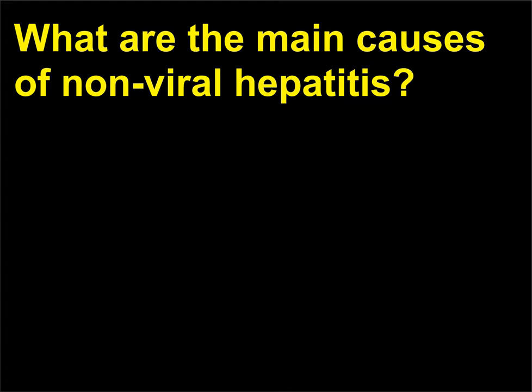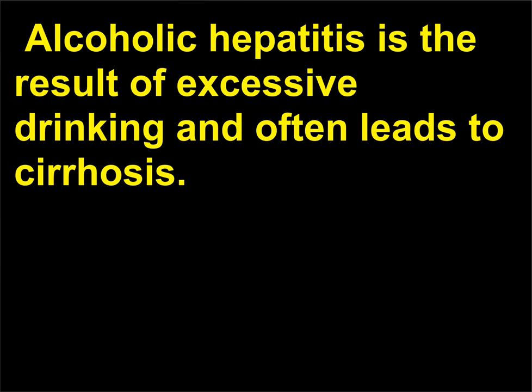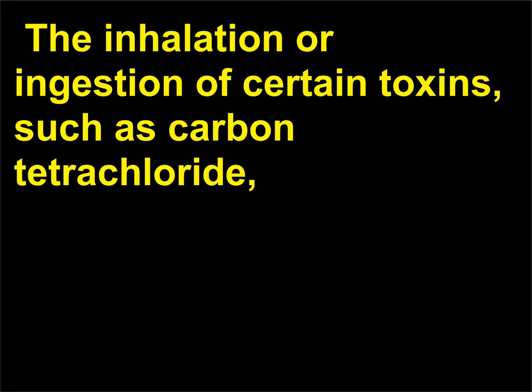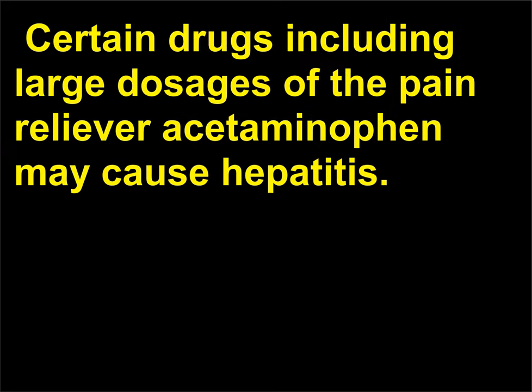What are the main causes of non-viral hepatitis? The two main types of non-viral hepatitis are alcoholic hepatitis and toxin/drug-induced hepatitis. Alcoholic hepatitis is the result of excessive drinking and often leads to cirrhosis. The inhalation or ingestion of certain toxins, such as carbon tetrachloride, vinyl chloride, and poisonous mushrooms are causes of hepatitis. Certain drugs including large dosages of the pain reliever acetaminophen may also cause hepatitis.